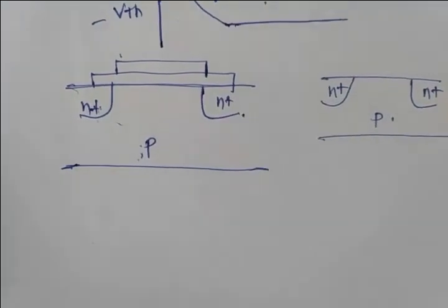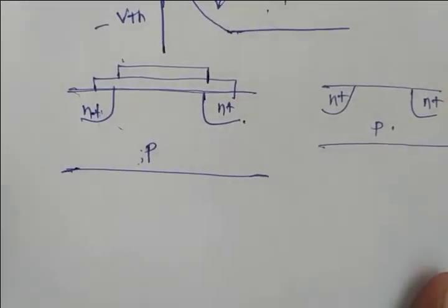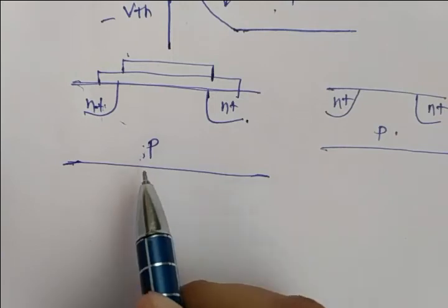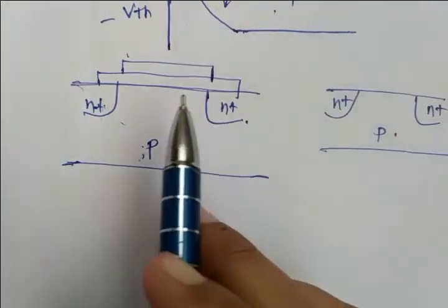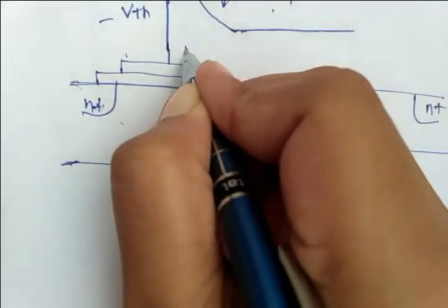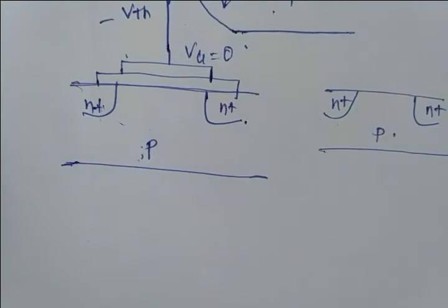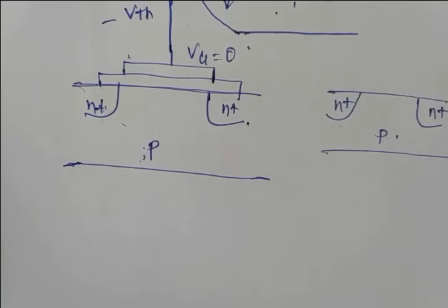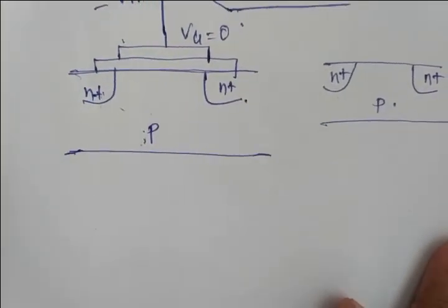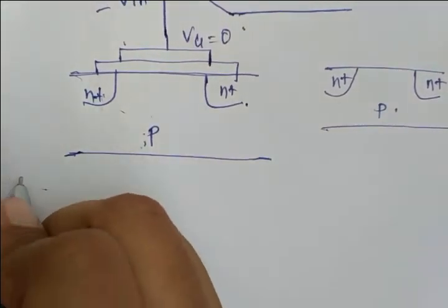Whenever there is an n+/p region, there is a built-in potential — as you know from the concept of the p-n junction diode. So there is also a built-in potential here. There is going to be a depletion region; source and drain regions are already depleted even at VG equal to zero, from the concept of the depletion region and built-in potential of the p-n junction diode.